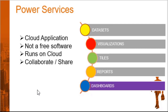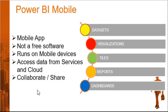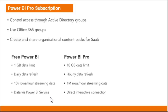Next is Power BI Mobile, a mobile app that is not free software. You download it and it runs on mobile devices. Its main purpose is to get data from Power BI Service on the cloud and view it on mobile devices, enabling collaboration and sharing. Regarding the Power BI Pro subscription, it controls access through Active Directory groups and supports Office 365 groups, allowing you to connect to different 365 groups when creating workspaces.